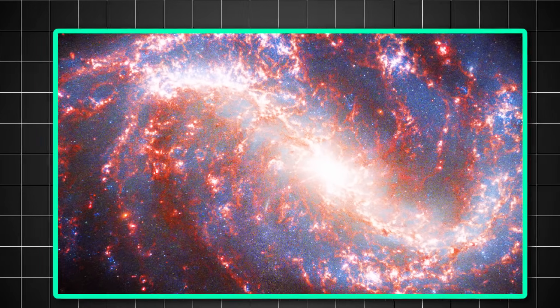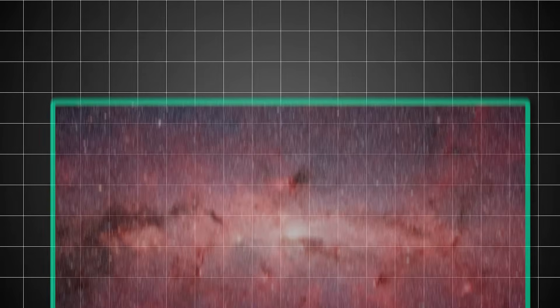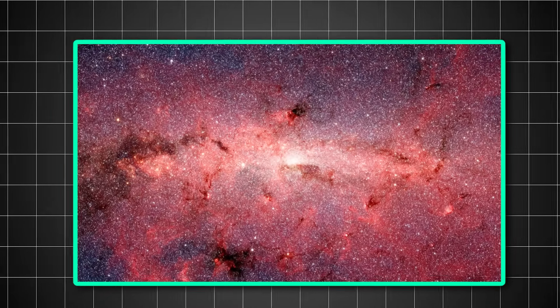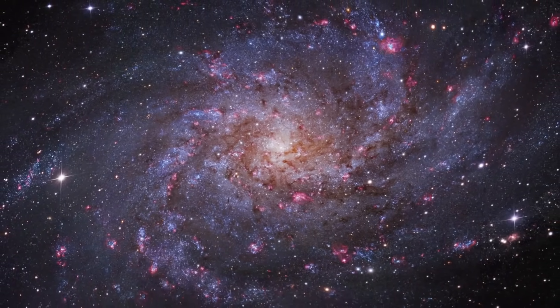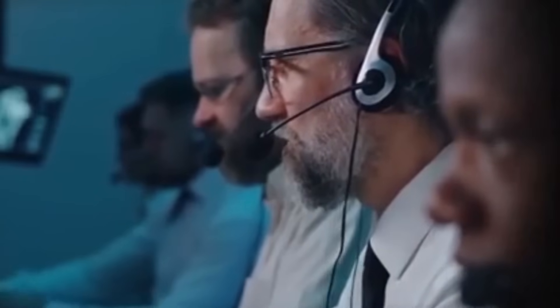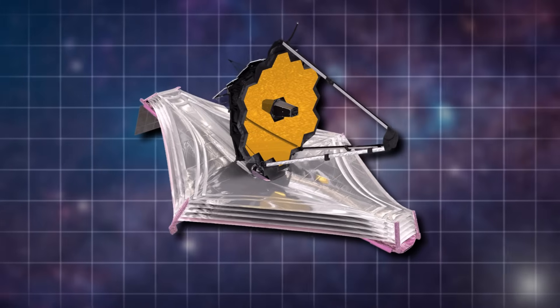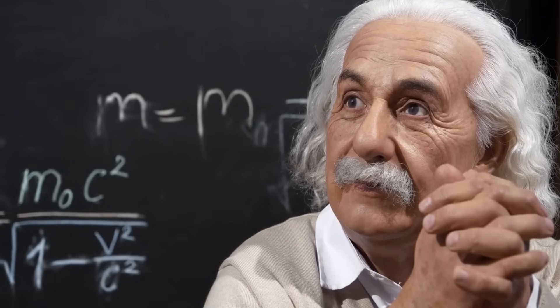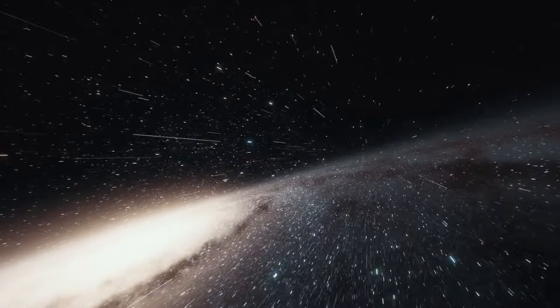These galaxies may also force us to rethink the distribution of matter in the early universe. Previously, it was believed that matter was relatively uniformly distributed after the Big Bang, only beginning to coalesce under gravity after hundreds of millions of years. The presence of so many well-formed galaxies so early implies that matter may have clumped more quickly, or that gravity behaved differently under extreme early conditions. The James Webb findings may even suggest new physics, perhaps modifications to Einstein's theory of general relativity, or an entirely new set of rules governing the infancy of the cosmos.